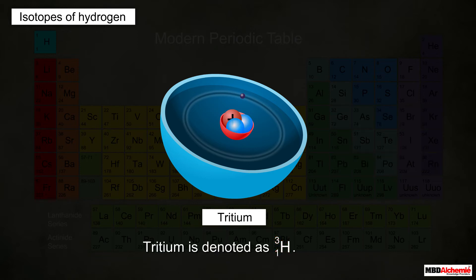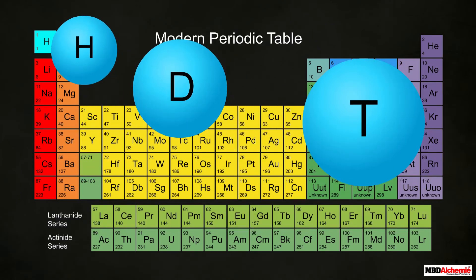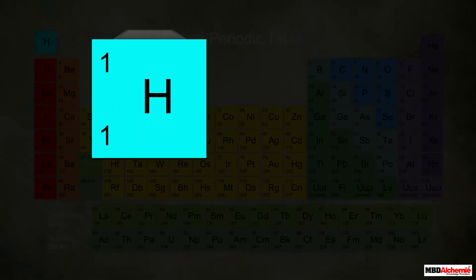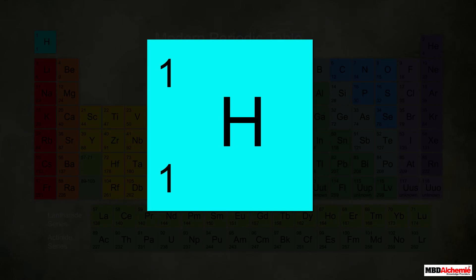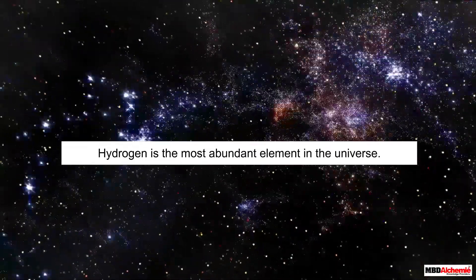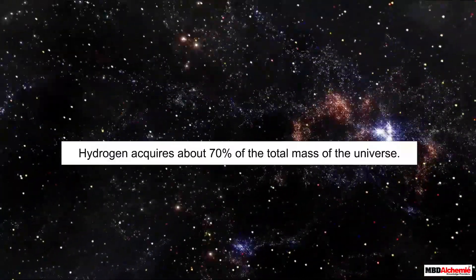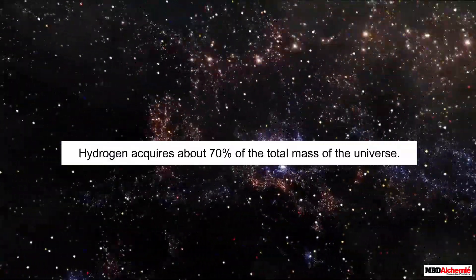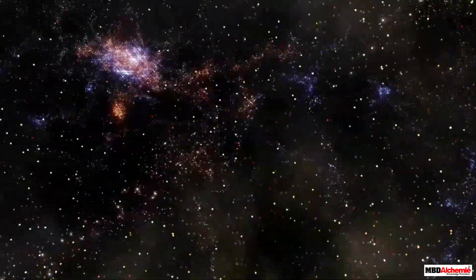Now that we have studied the isotopes of hydrogen, let us learn about its occurrence. Hydrogen is the most abundant element in the universe. It acquires about 70% of the total mass of the universe.